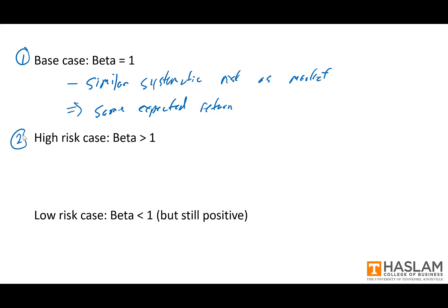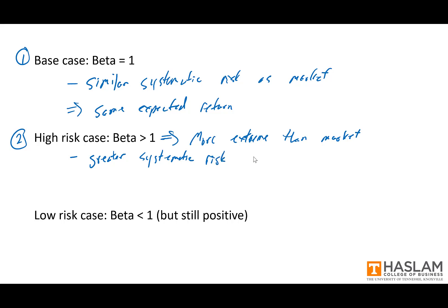Second case: beta is greater than one. This means that price movements are more extreme than the market's. So if the market is up 5%, the stock might be up 6%; if the market is down 5%, the stock might be down 6%. Here we have greater systematic risk than the market, and since the stock has greater systematic risk, it should have a greater expected return.